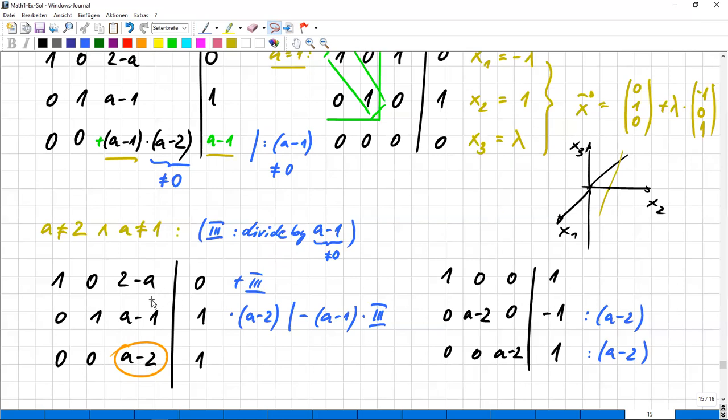Two minus A plus A minus two, cancels, gets zero. And zero plus one, of course, is one. In the second row, it's, okay, that's the hardest step.